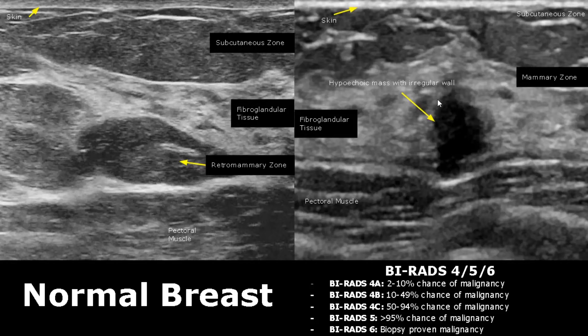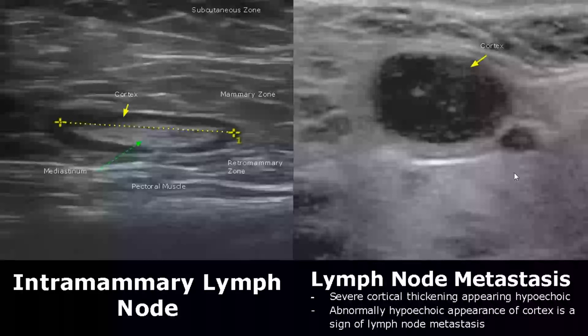Usually hypoechoic masses with irregular walls or a spiculated appearance are malignant, and they have a taller-than-wide orientation. Here we have a case of lymph node metastasis.